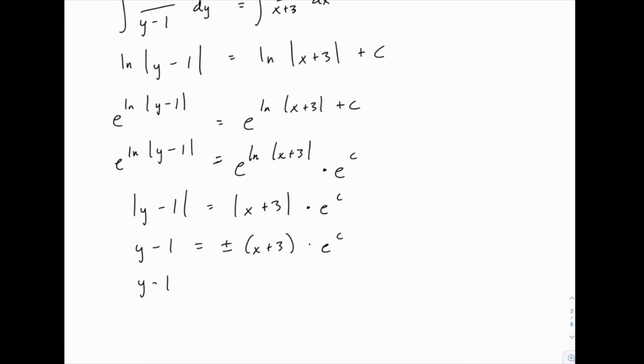So let me write that this way. And I've now replaced e to the c with k. And the reason I do that is now that plus or minus k can really just be called k. Because an arbitrary constant already has an arbitrary sign associated with it, positive or negative.